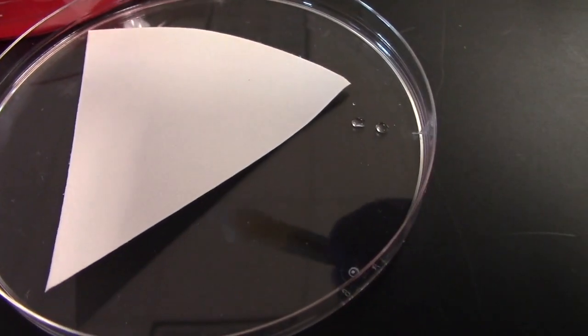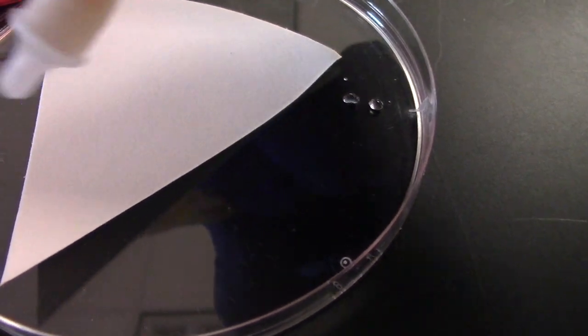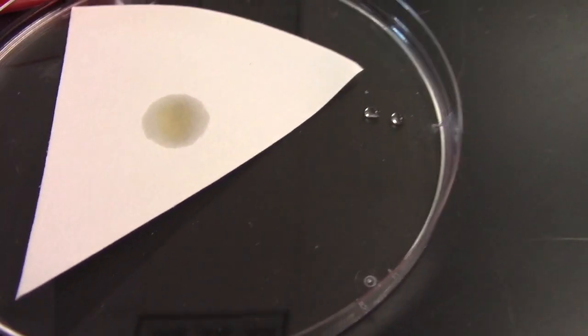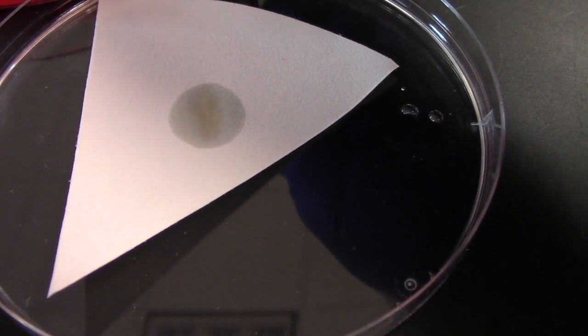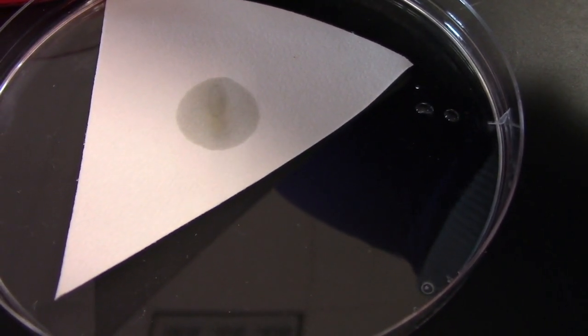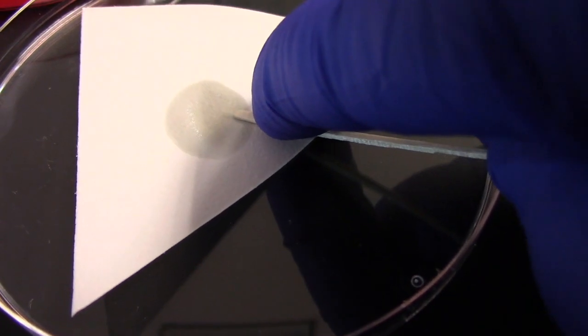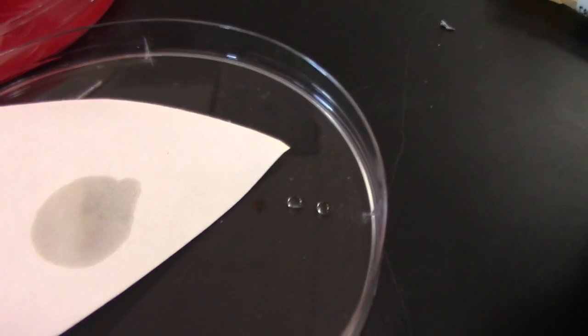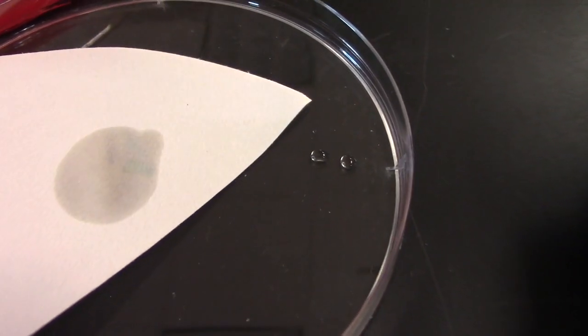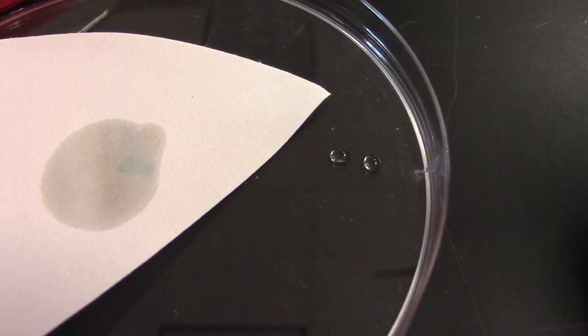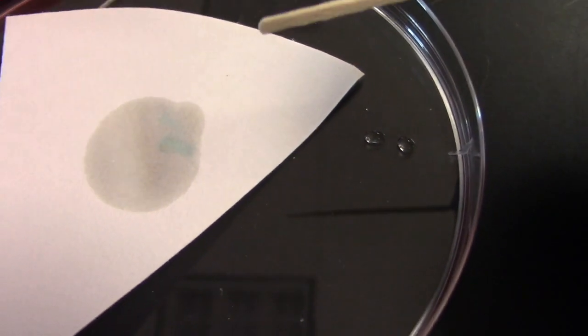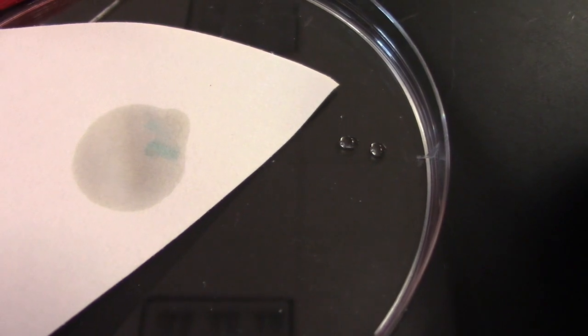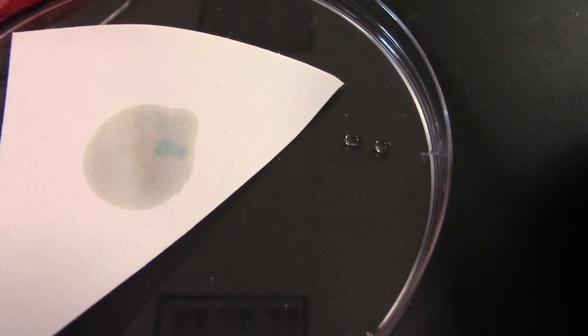Another spot test that we're going to do is the spot indole test. Again, we'll use a piece of filter paper inside the lid of our petri dish and drop on one drop of the indole reagent. We'll obtain a small amount of colony and smear it onto the area. Our positive indole test will show a color change to a blue-green color. You can see that color developing here.